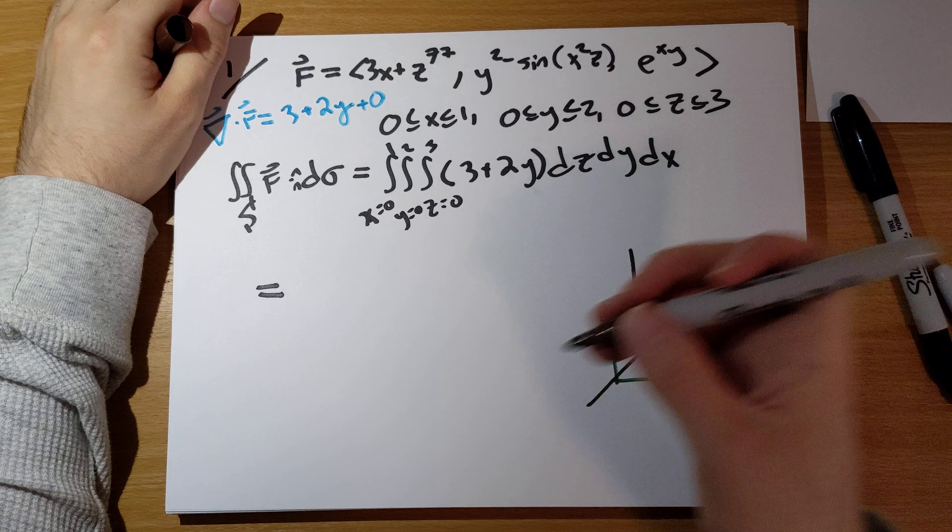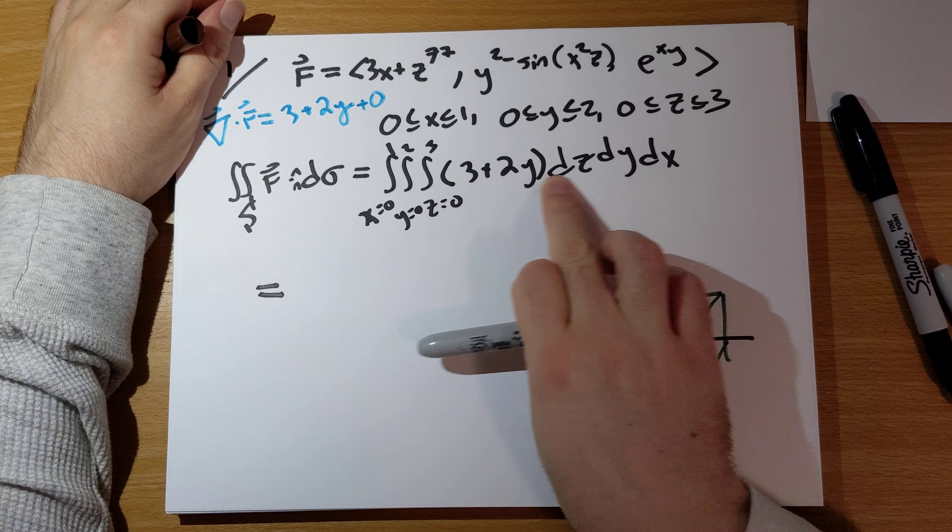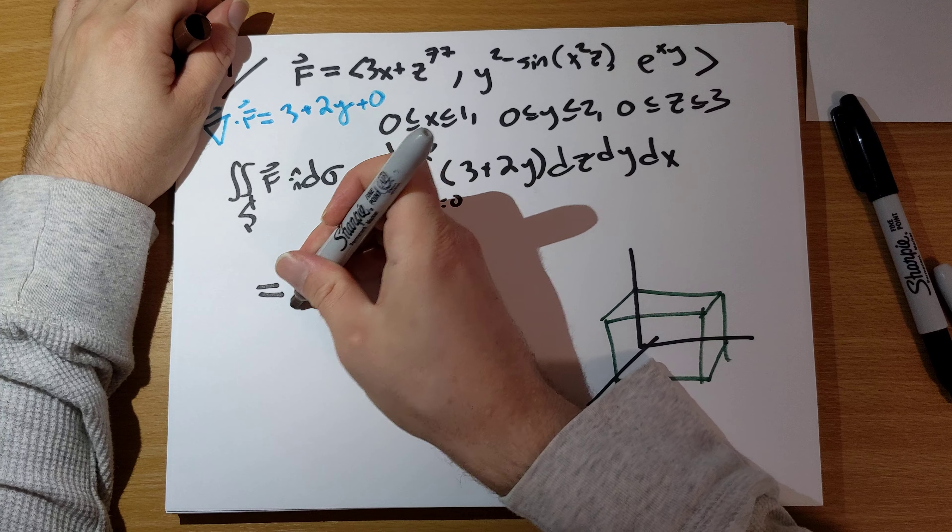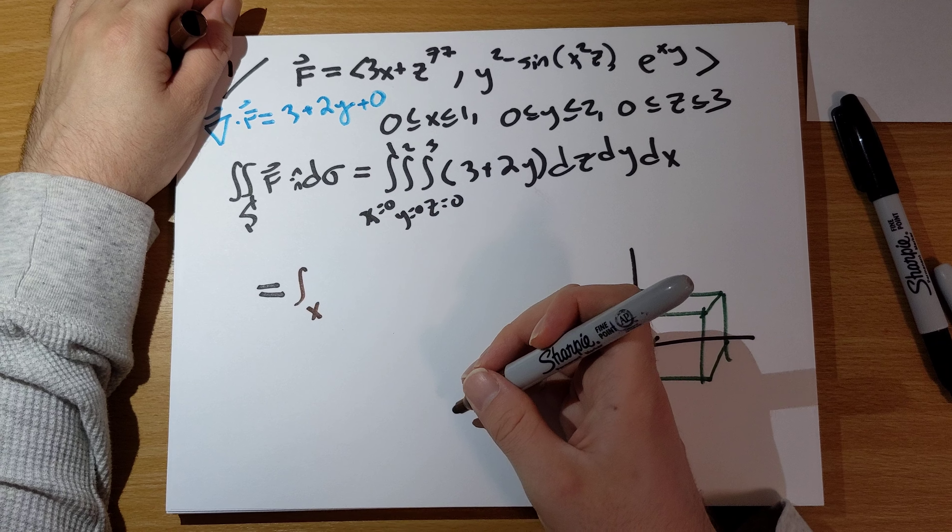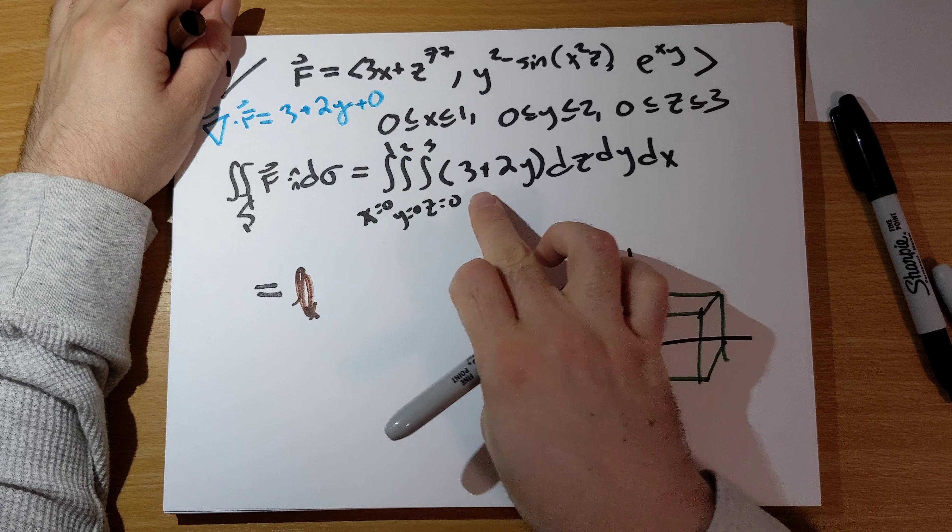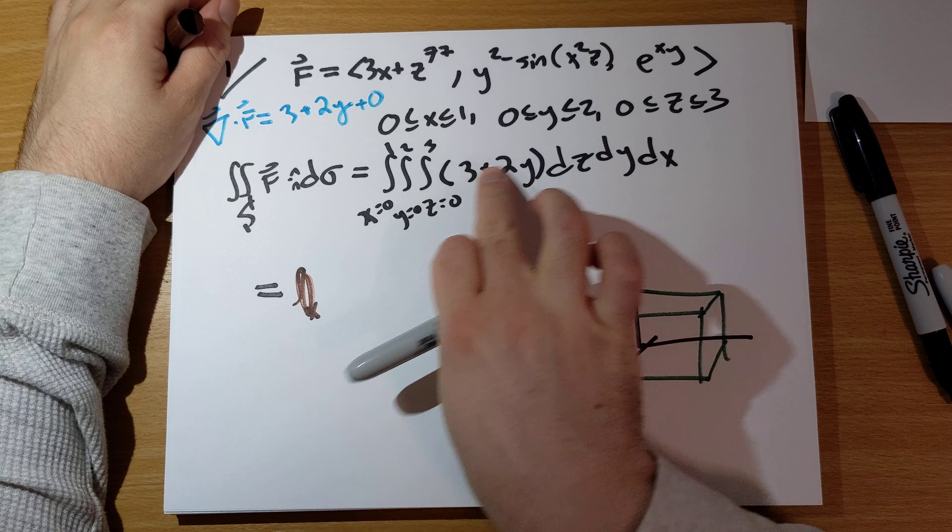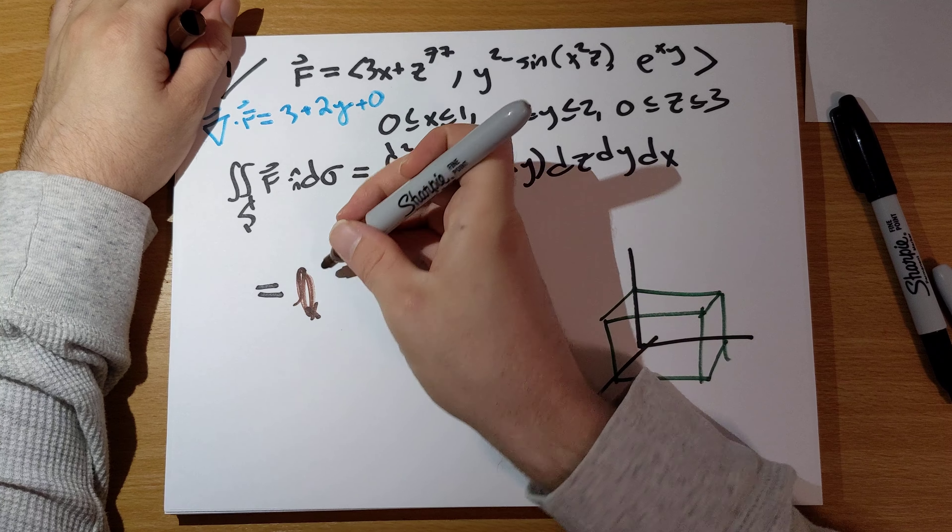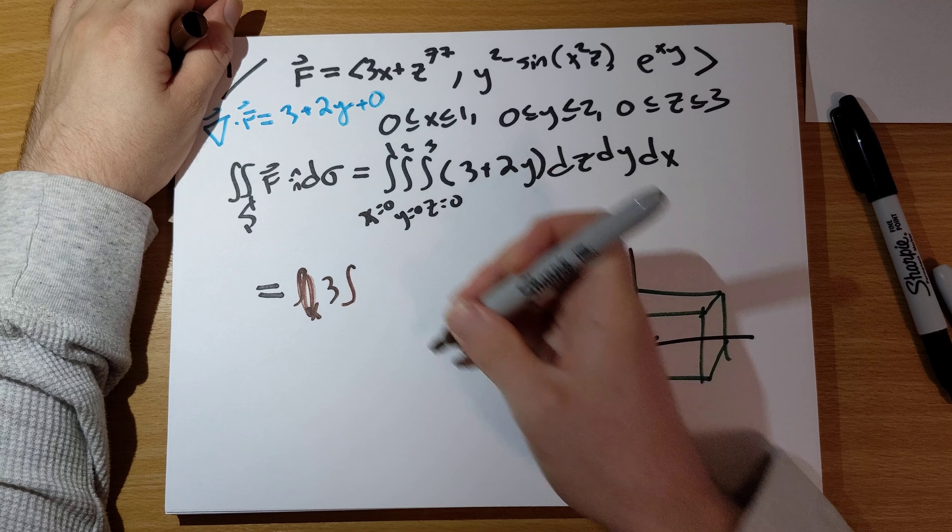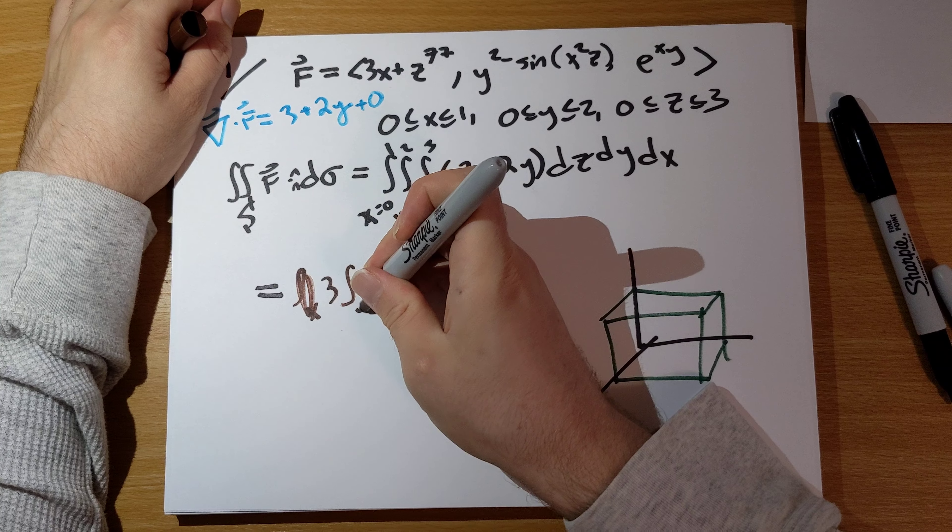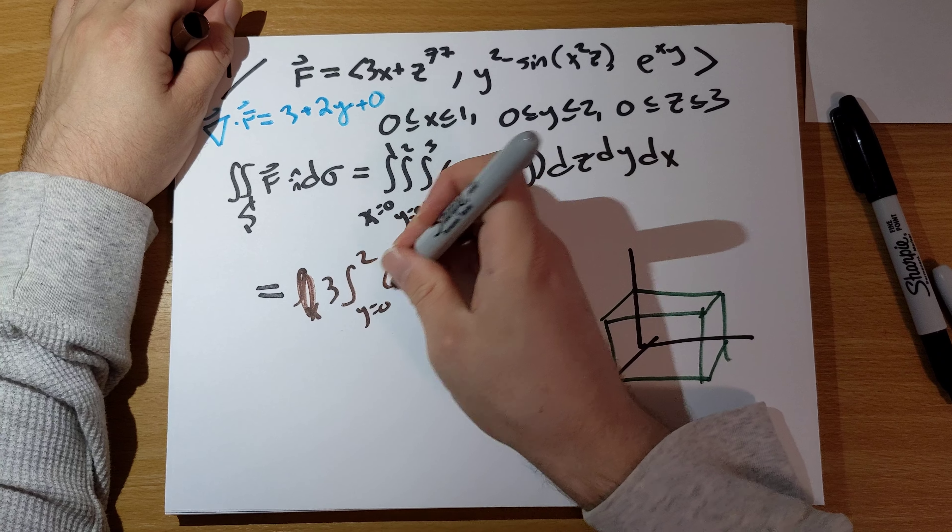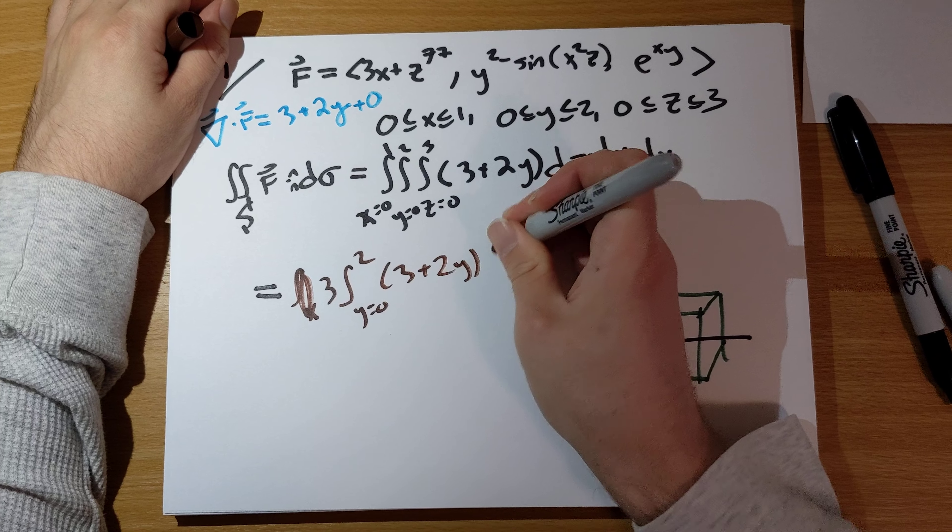So, what do we have here? Integrating this with respect to z just ends up multiplying the answer by 3. Integrating this with respect to x, there's no x in here, just multiply the answer by 1. So, it's 3 times the integral y from 0 to 2 of 3 plus 2y, dy.